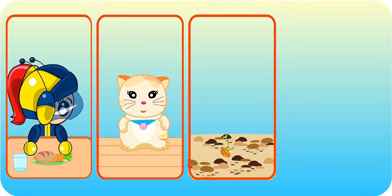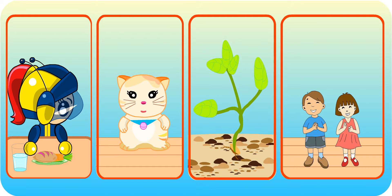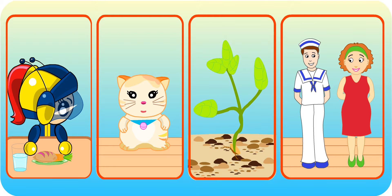Did you have breakfast this morning? You need to eat and drink so that you can grow. A kitten will grow into a cat. A seed will grow into an adult plant. So the boy and the girl will grow into a man and a woman.